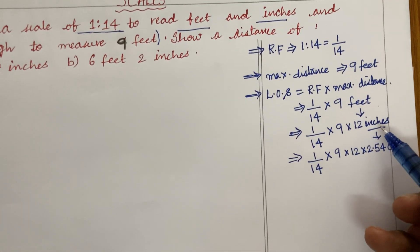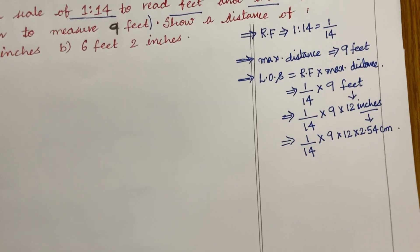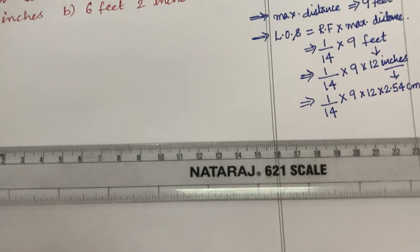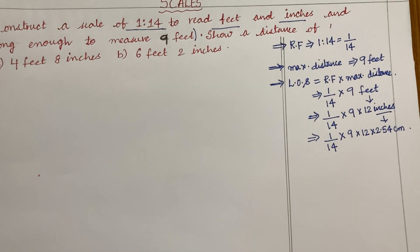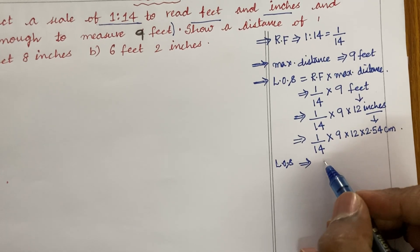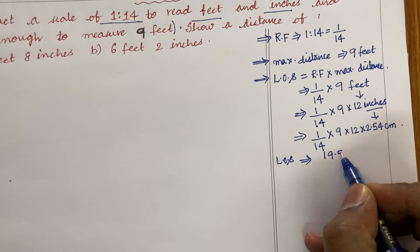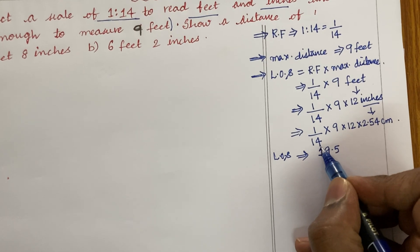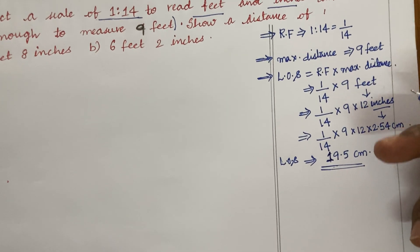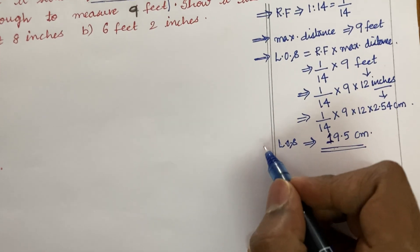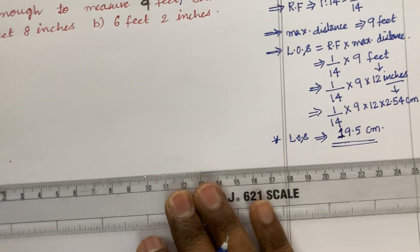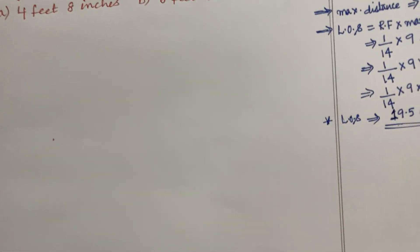Once I convert from feet to inches, then from inches to centimeters — it is all because my scale is a centimeter scale. The scale I am going to use to work out the length of the scale is all about centimeters. Upon putting this value in the calculator — please do calculate accordingly and do not forget to carry your calculator to the exam — the length of the scale is found to be 19.5 centimeters. Now, we can draw a 19.5-centimeter line to construct the scale.